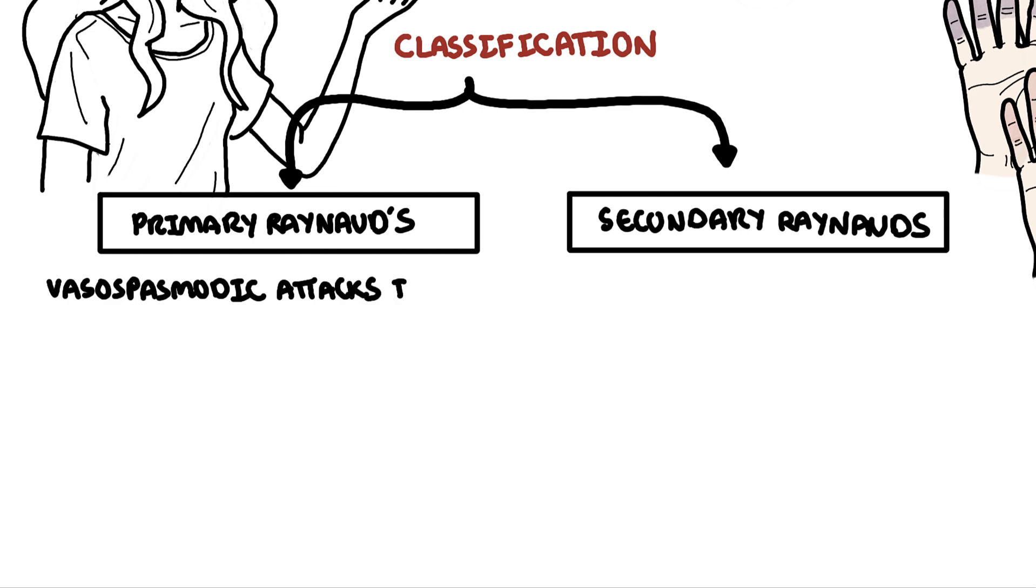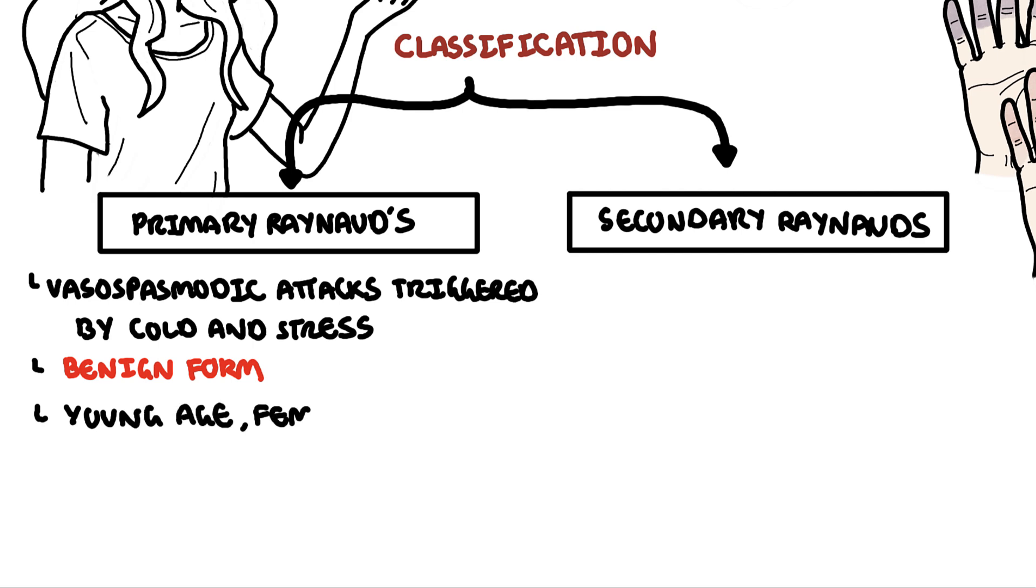There are vasospasmodic attacks triggered by cold or stress. This is a benign form. It occurs in the absence of any other underlying disease, and generally affects young people, often women, typically between the ages of 15 and 30.